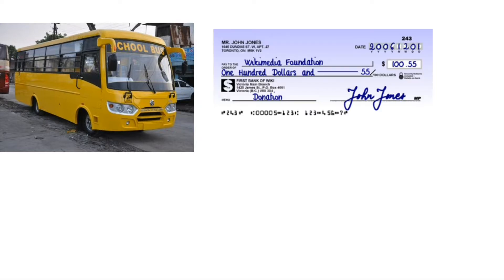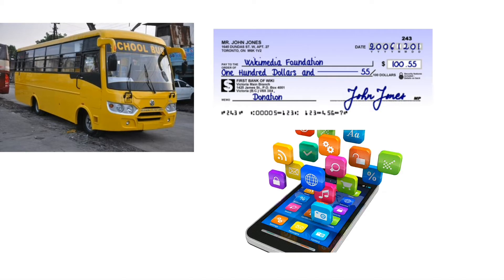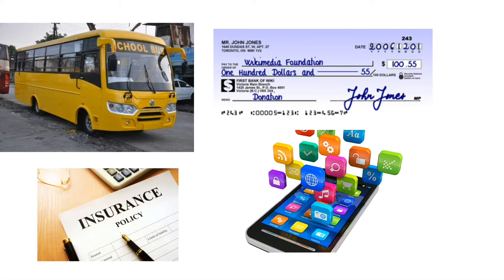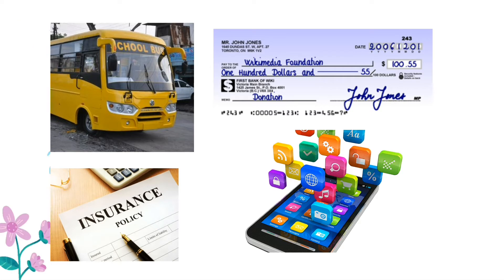When we are coming to school, we are using transportation service. When we are paying school fees by check, we are using banking services. When we are communicating with each other — like mobile internet or WhatsApp — we are using communication services. And our parents are also taking insurance for the family or car, so we are also using insurance services.